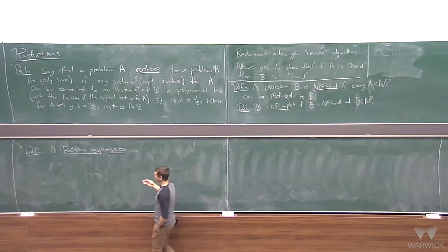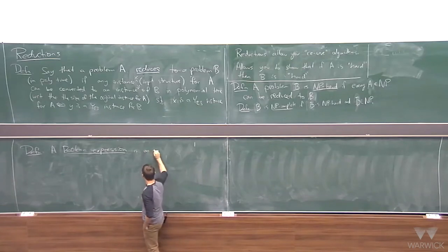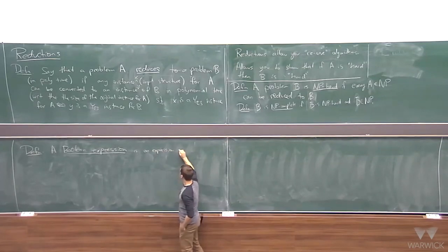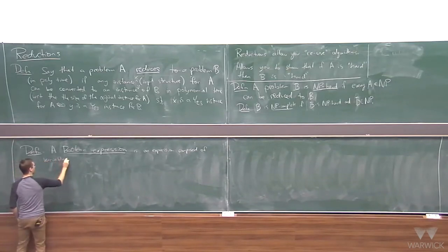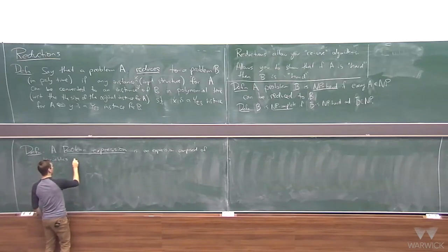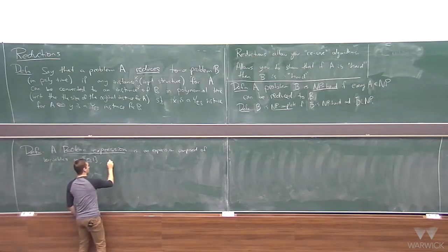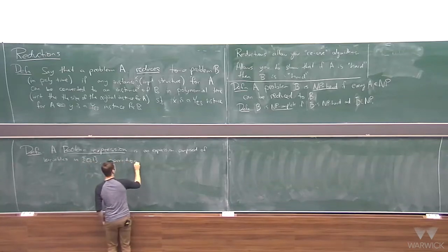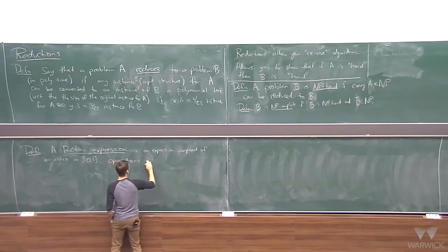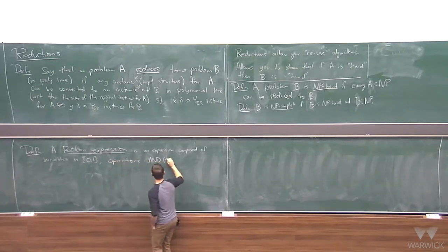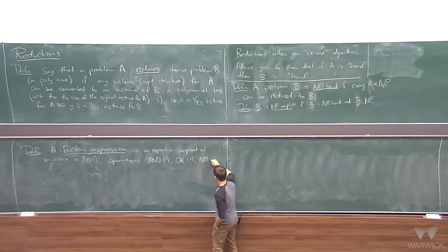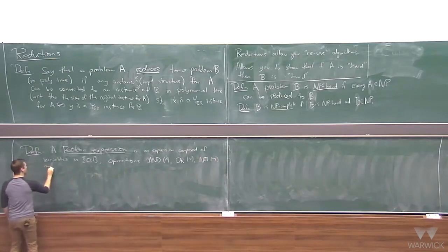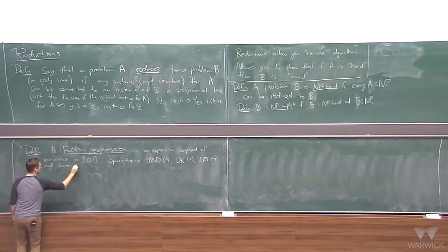A Boolean expression is an expression composed of variables, where the variables always have value either 0 or 1 (think false and true). The operations are: AND (written ∧), OR (written ∨), and NOT (written ¬), along with parentheses.